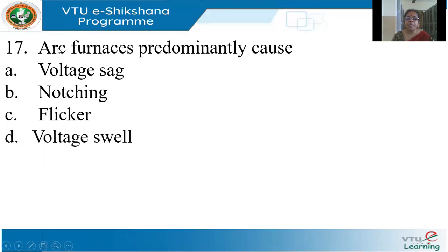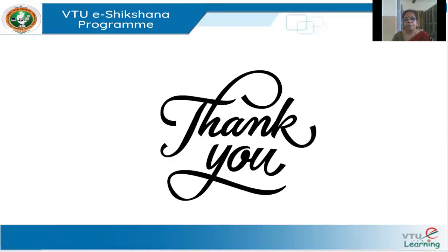Arc furnaces predominantly cause voltage sag, notching, flicker, or voltage swell. They cause flicker, along with welding equipment. These are some quick MCQs which would be helpful if you are preparing for an exam.